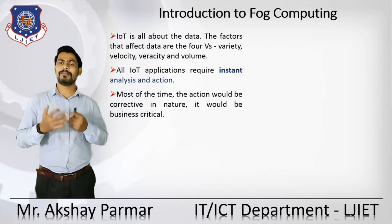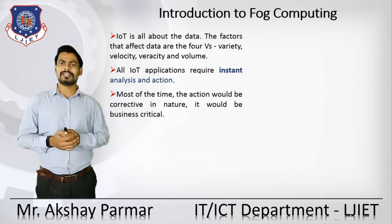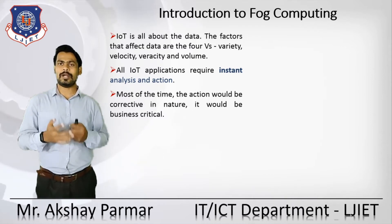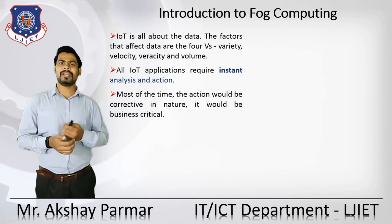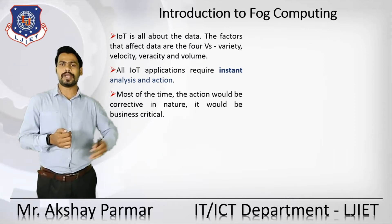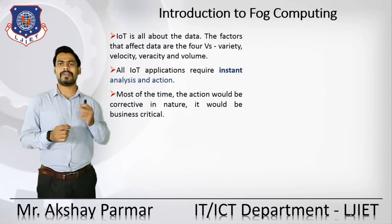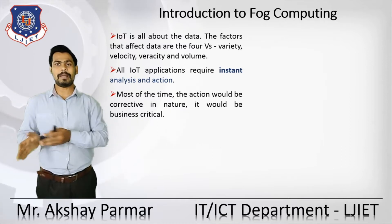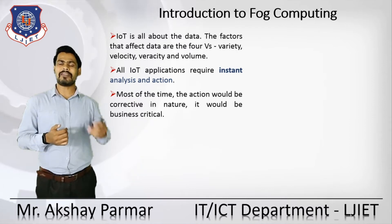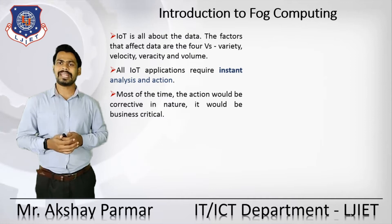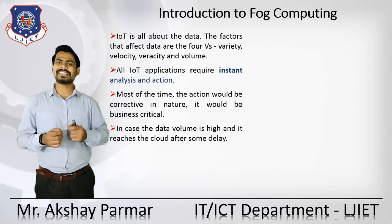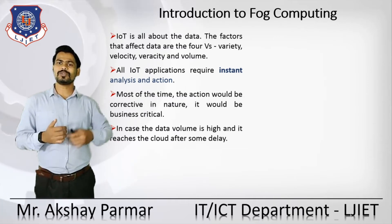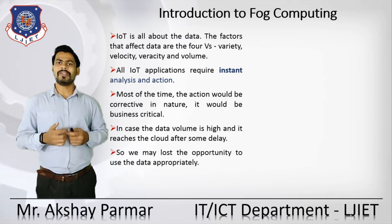Another example is in the manufacturing plant, where industry giants use IoT systems for quality assurance. If any defective product is detected but there is a lag in analyzing the data quickly, they cannot take precautionary steps instantly, and that defective product will enter the market, compromising revenue. In such cases, the action would be corrective in nature and business critical. If data volume is high and reaches the cloud after a time delay, we may lose the opportunity to use the data appropriately.